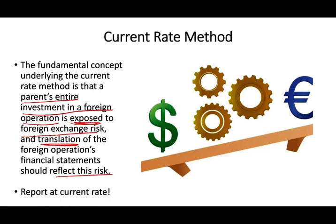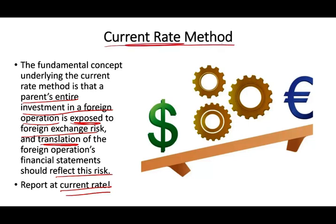Simply put, if you are exposed to foreign currency risk, you report things at the current rate. Reporting at the current rate shows whether you have a gain or a loss in your adjustment. Current, from the word current, means the current market value — so you report everything at current market value. The reason is you have exposure, so you show it.